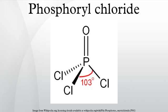The reaction of phosphorus pentachloride with boric acid or oxalic acid: 3PCl5 + 2B(OH)3 → 3POCl3 + B2O3 + 6HCl; PCl5 + 2 → POCl3 + CO + CO2 + 2HCl. The oxidation of phosphorus trichloride with potassium chlorate: 3PCl3 + KClO3 → 3POCl3 + KCl. The reaction of phosphorus pentoxide with sodium chloride: 2P2O5 + 3NaCl → 3NaPO3 + POCl3.